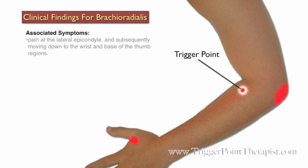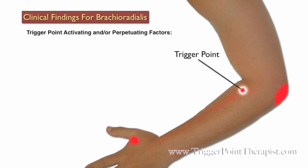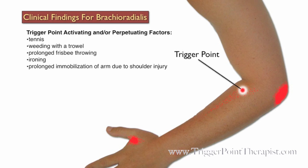Here are the clinical findings for brachioradialis trigger points. Clients complain of pain that starts at the lateral epicondyle and moves down to the wrist and to the base of the thumb. The therapist can confirm the presence of an active trigger point by tapping on the lateral epicondyle and eliciting pain and tenderness. Your client may also complain of pronounced weakness of the grip with objects frequently slipping out of their grasp. Some activating factors include playing tennis, weeding with a trowel, prolonged frisbee throwing, ironing, and prolonged immobilization after shoulder injury.